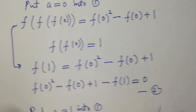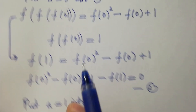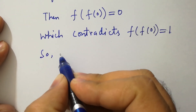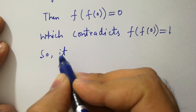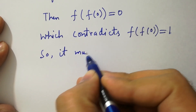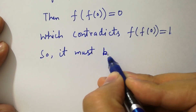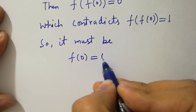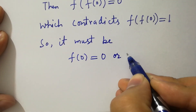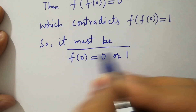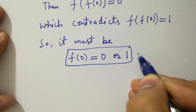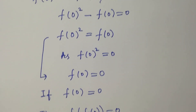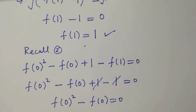But we had f of f of 0 equal to 1, so it must be that f of 0 equals 1, which is our final answer. Thanks for watching this video, please subscribe to this channel to get notifications of my new videos.